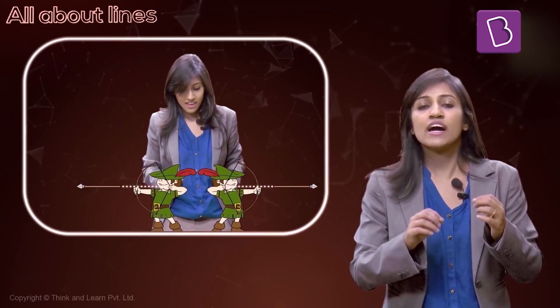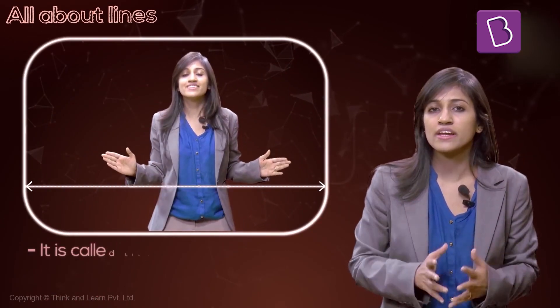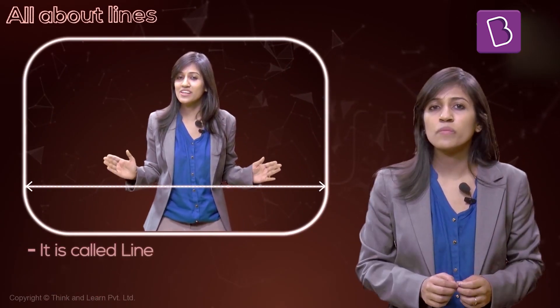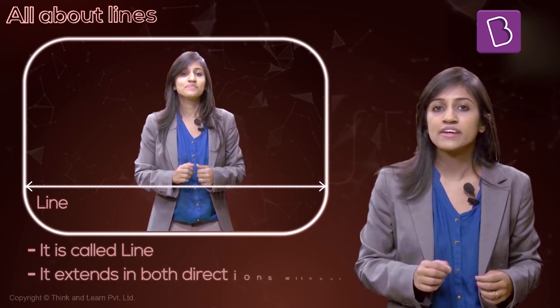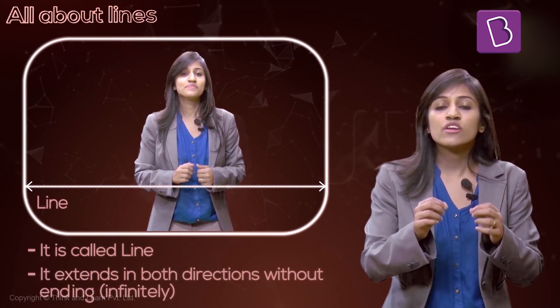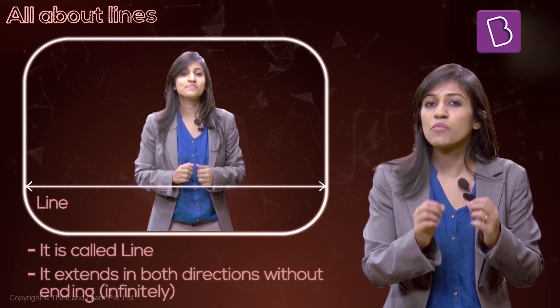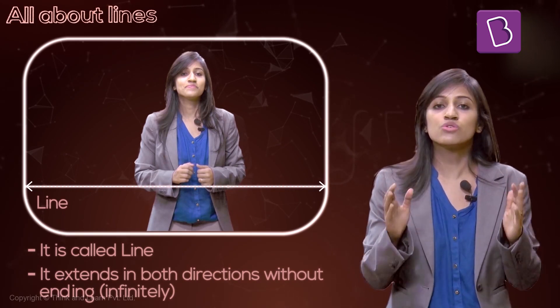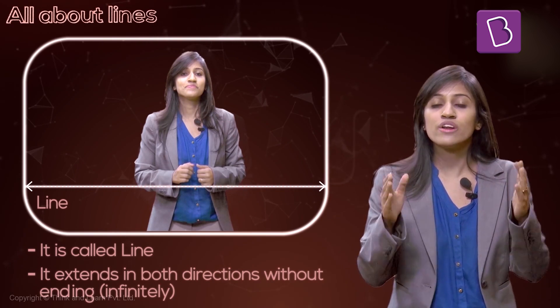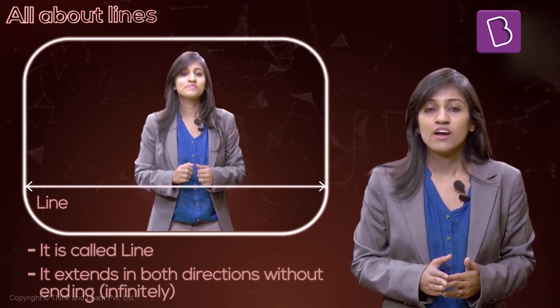Finally, we had something called a line. What did the line do? It did the same thing a ray did, but in two directions. So a line originates from a point and goes in two ways, and in both ways it goes on and on forever. I hope now that the difference between them is clear — let's start looking at each of them in more detail.